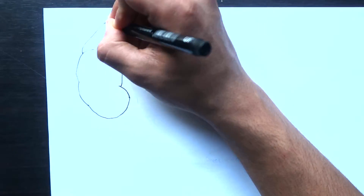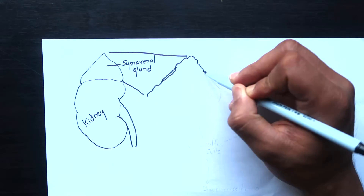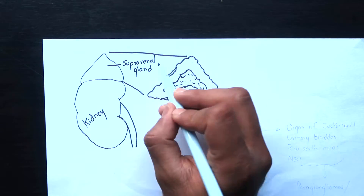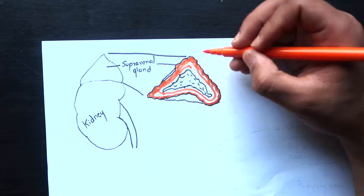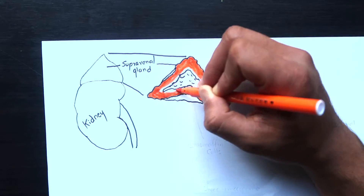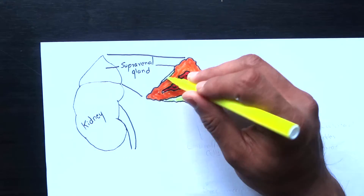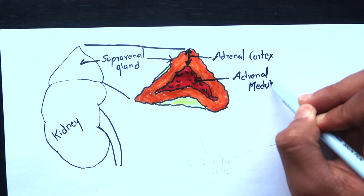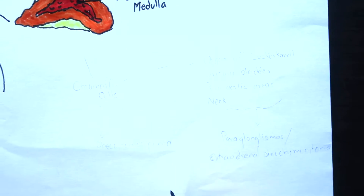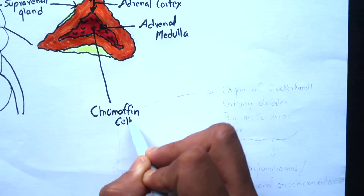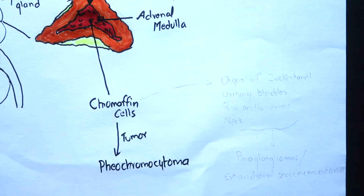In this video we are going to learn about Pheochromocytoma. This is the tumor arising from the adrenal gland or suprarenal gland which lies above the kidney. The cross-section of the suprarenal gland shows an outer part called adrenal cortex and an inner part called adrenal medulla. The medulla is composed of chromaffin cells that secrete catecholamines, and the tumor arising from these cells is called Pheochromocytoma.